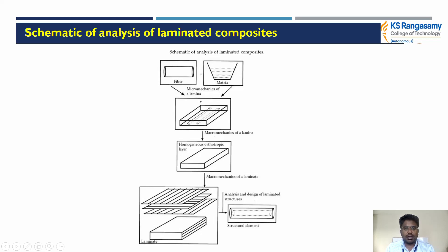The first step is micro mechanics of the lamina — we insert the fiber and matrix into one plate. The second step is macro mechanics of the lamina and homogeneous orthotropic layer. The third step is analysis and design of the laminated structure. Finally, we obtain the structural element of the composite.